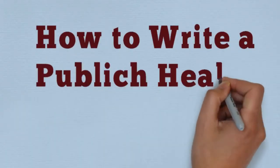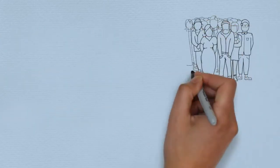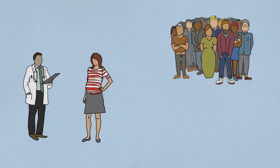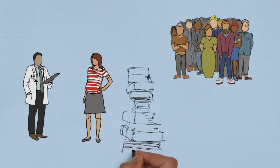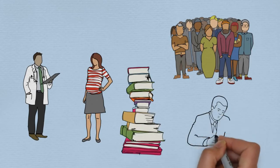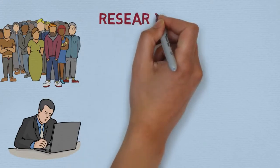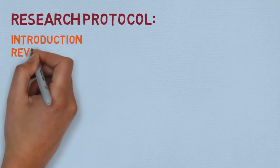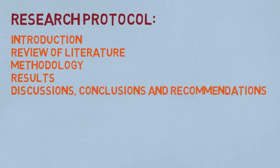In today's video we are going to be talking about how to write a public health research paper. In public health we look at a disease entity in terms of the population, whereas in clinical study we look at the disease entity in terms of an individual. That is why public health research is a special kind of study. A research is a process of systematic search for verifiable truth about a problem phenomenon, requiring a systematically organized approach called the research protocol. The research protocol includes the introduction, literature review, methodology, results, and discussion, conclusion, and recommendation.